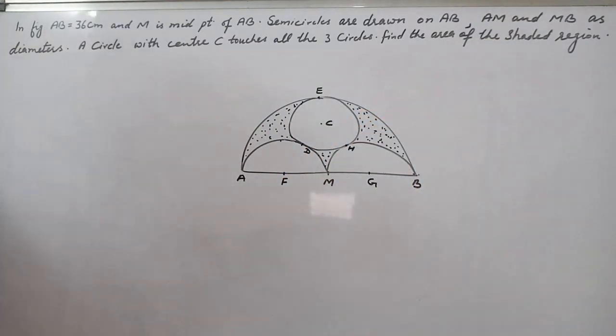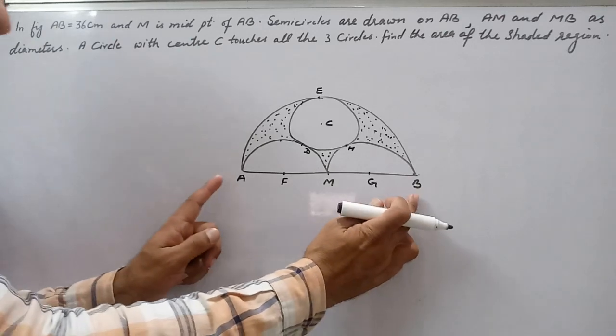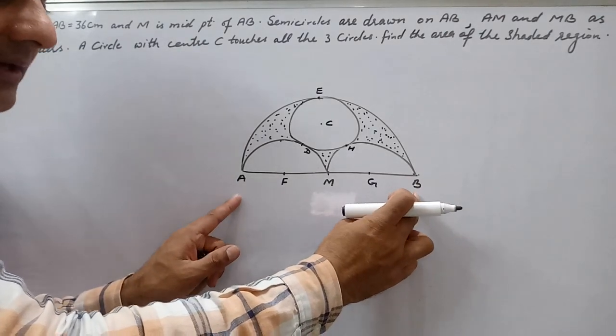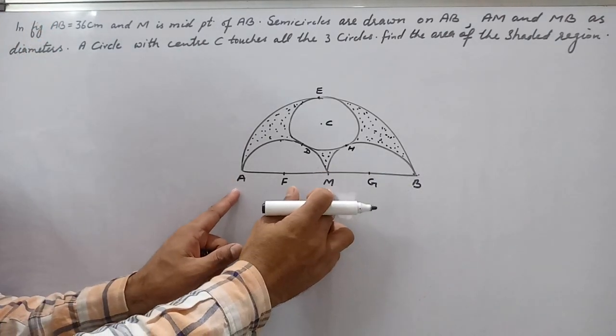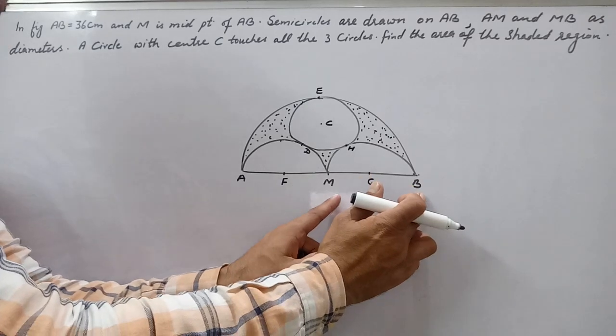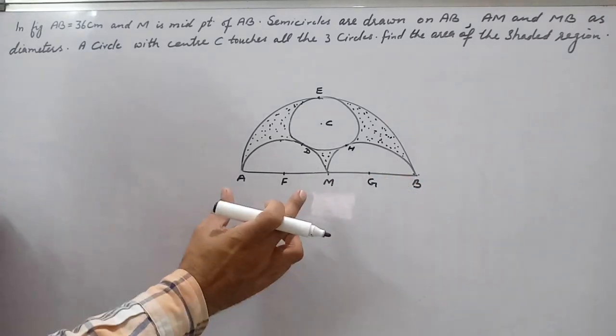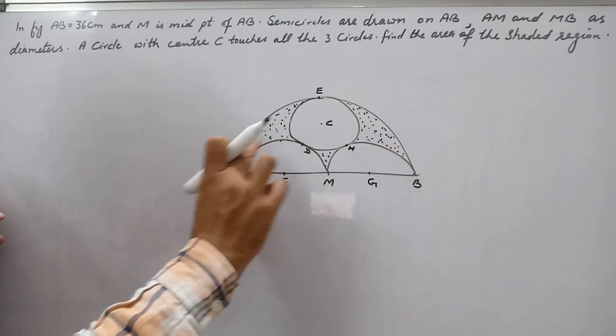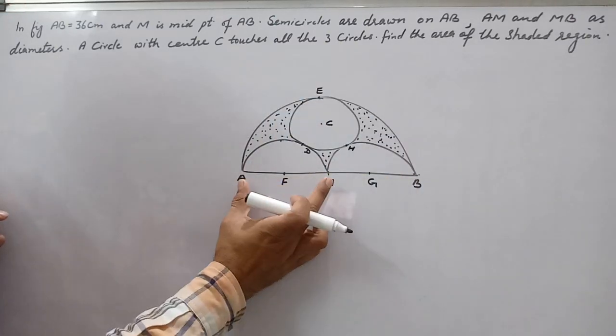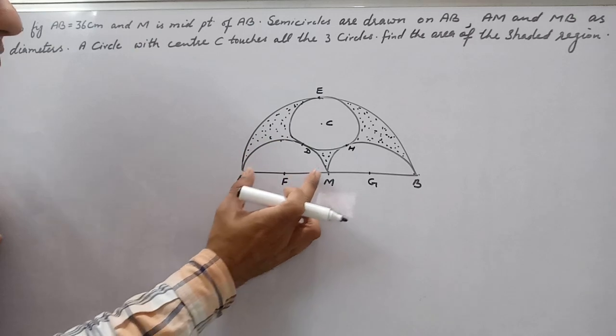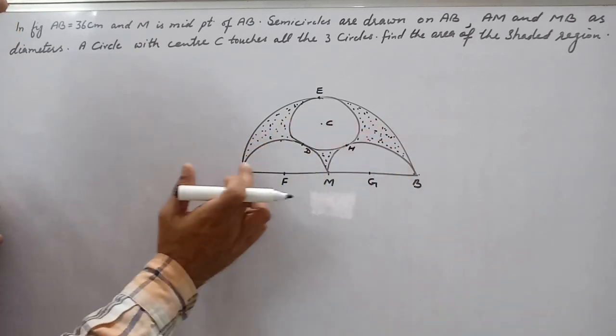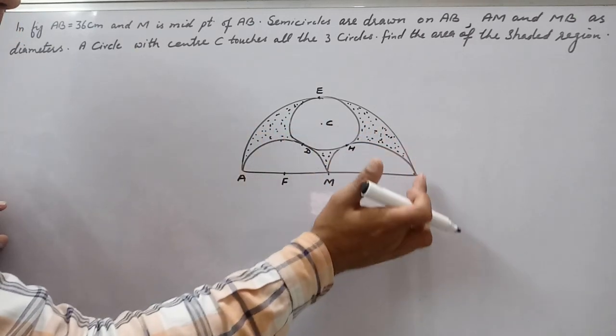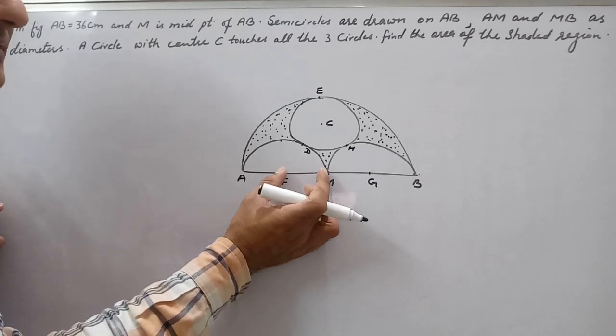For solving this question, AB is given as 36 centimeters. So AM will be 18 centimeters and MB will also be 18 centimeters. The radius of the big semicircle AEB is 18 centimeters, and the radius of these small semicircles ADM and MHB is 9 centimeters.